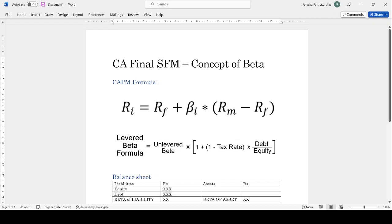Beta represents the systematic risk, that is the sensitivity of a stock's return to the market return.